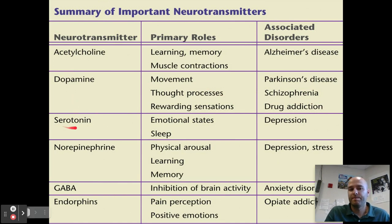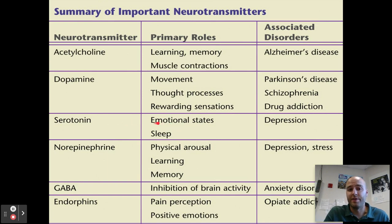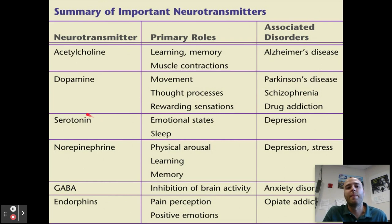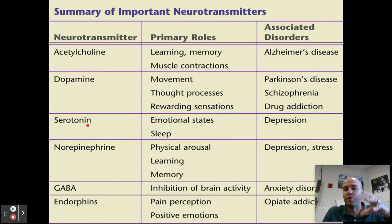Our next neurotransmitter is serotonin, which helps regulate our emotional states and sleep. An undersupply can lead to depression — problems with emotional states and sleep can easily lead to depression. We'll talk about selective serotonin reuptake inhibitors or SSRIs, whose function is to prevent serotonin from being reuptaken so there's more of it in the synapse to help treat people with depression.